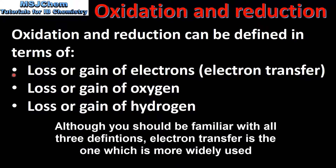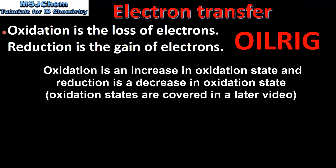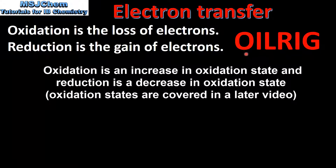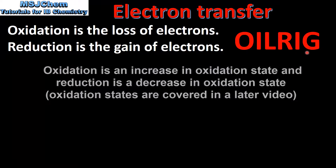We'll start by looking at electron transfer. Here we have the definitions of oxidation and reduction in terms of electron transfer. Oxidation is the loss of electrons and reduction is the gain of electrons. An easy way to remember this is OIL RIG — oxidation is loss, reduction is gain.